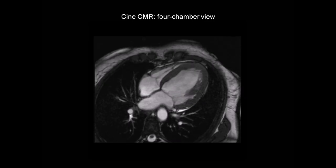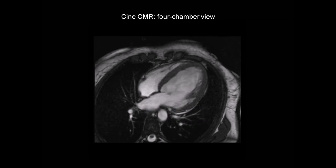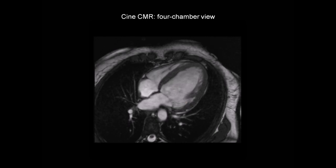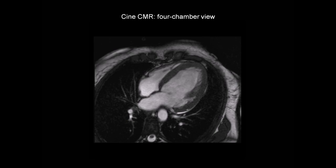This is a 48-year-old female patient who presented with clinical features compatible with myocarditis. This is her cine-CMR image from the four-chamber view. We have the left ventricle, left atrium, right ventricle, and right atrium. What is notable is that the left ventricle is dilated and severely impaired — her left ventricular ejection fraction was just 20%. So she has severely impaired left ventricular systolic function, which is one of the supportive pieces of evidence for a diagnosis of myocarditis.